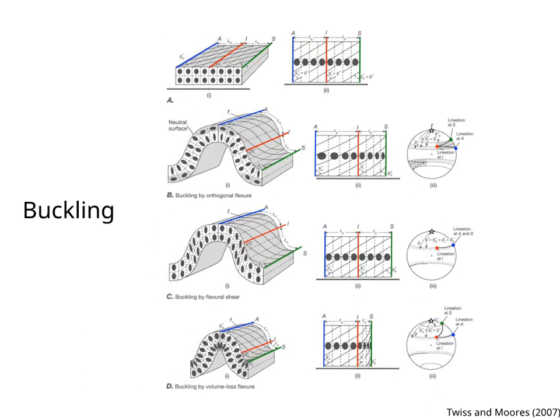This figure shows the strain distribution of class 1B folds formed by buckling. The blue lines and points on the stereo net correspond to the hinge of the anticline, the red lines and points are the inflection line, and the green lines and points are the hinge of the syncline.